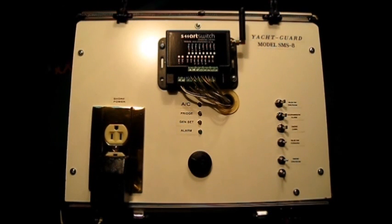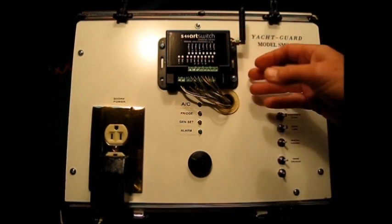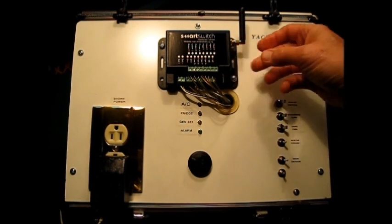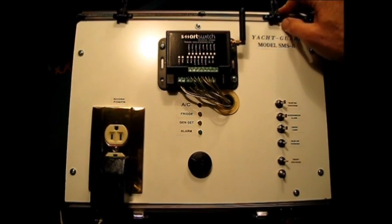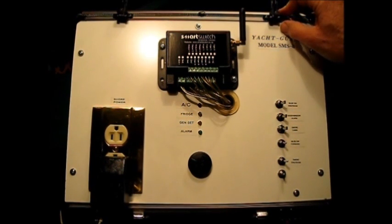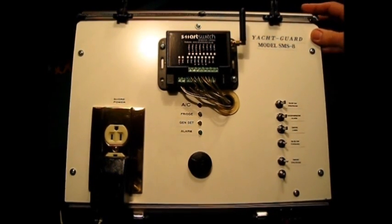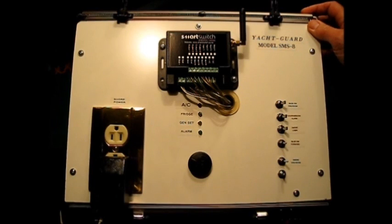When any event occurs on your vessel, the SMS-8 will monitor that event, send back a text message via the cellular network to your cell phone, and provide you an alert of whatever condition has changed state.